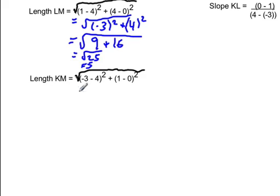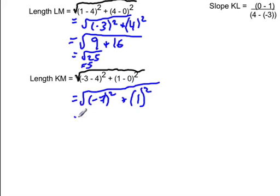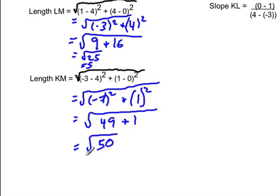For the next one, for KM, this would come out to be square root of negative 7 in the bracket, negative 3 minus 4, plus 1 minus 0 is 1 squared. Negative 7 squared is 49, positive 49. Make sure you watch your signs, and 49 plus 1, because 1 times 1 is 1, and this is the square root of 50. This simplifies to be the square root of 25 times the square root of 2, and square root of 25 is 5 root 2.